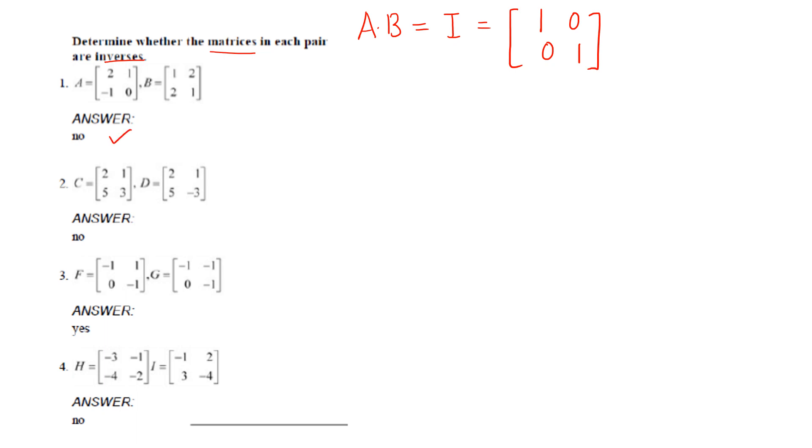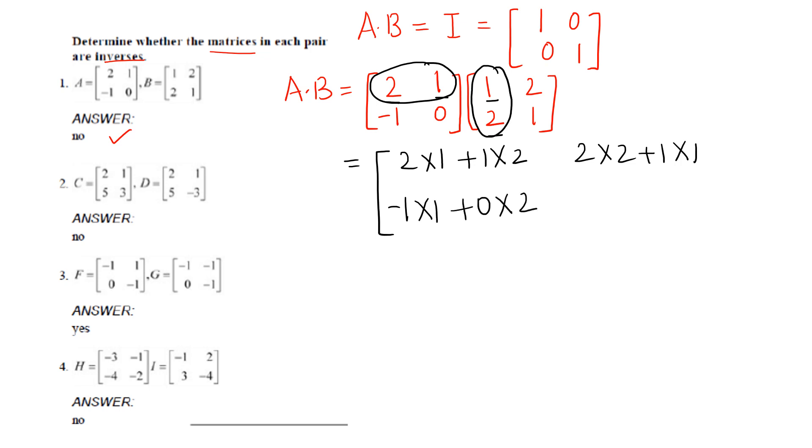If you have seen the videos carefully, you will know that a and b will be inverse if a multiplied with b is the identity matrix which is 1, 0, 0, 1. So let's check. Here the answer would come out to be no. We multiply a with b. First row of the first matrix get multiplied with first column. So 2 multiplied with 1 plus 1 multiplied with 2. Similarly 2 with 2 plus 1 with 1. Negative 1 with 1 plus 0 with 2 and negative 1 with 2 plus 0 with 1. This matrix comes out to be 4, 5, negative 1, negative 2. It is not coming as identity matrix. So they cannot be inverse. Answer is no.